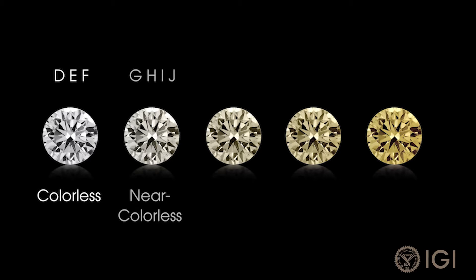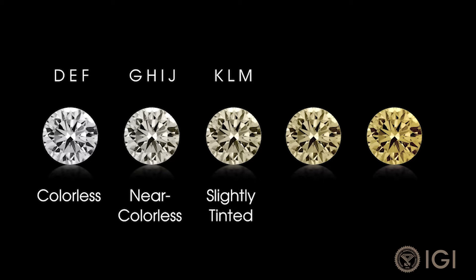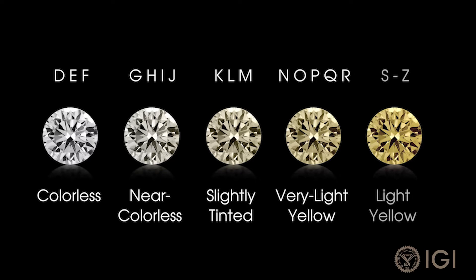G, H, I, and J are near colorless. Colors K through Z go from slightly tinted to very light and light shades of yellow or brown.